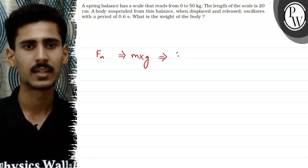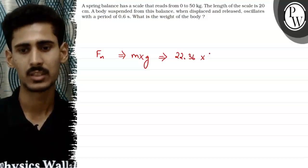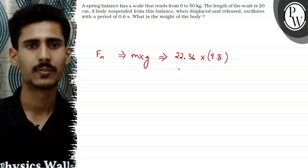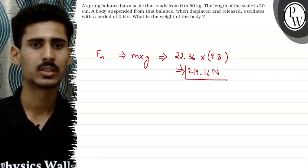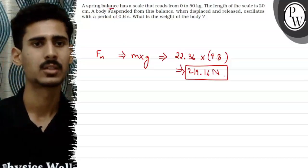So we found mass was 22.36 into the value of g is 9.8 meter per second square. So the weight of the body is 219.16 Newtons. So this will be the total weight of the body, which is hanging from this spring balance.